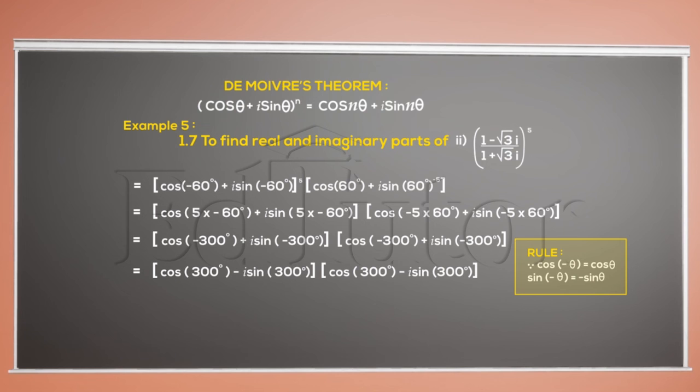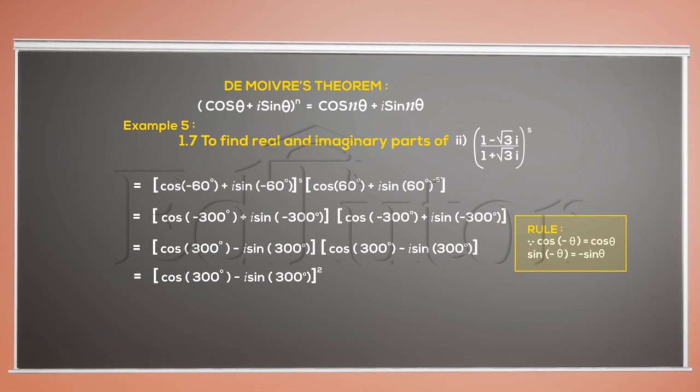Notice something in the expression? The values in the brackets are the same. Hence, we can write it once with a square. It means the same thing. Now, simply substitute the values of cos 300 and sin 300.